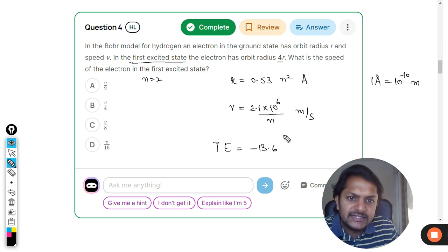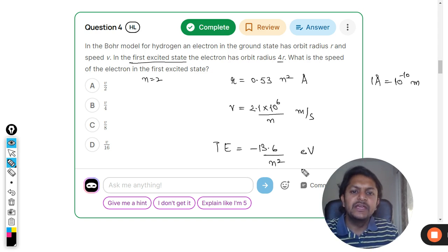And accordingly there is a third formula also, which is for the total energy, and that is given by negative 13.6 divided by n square, and the unit is eV. So this is the total energy.